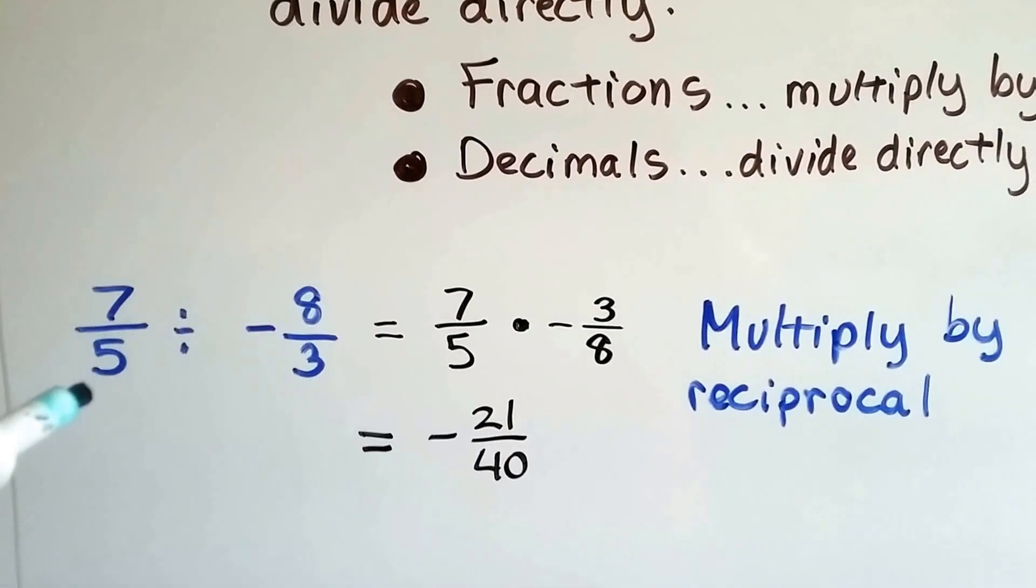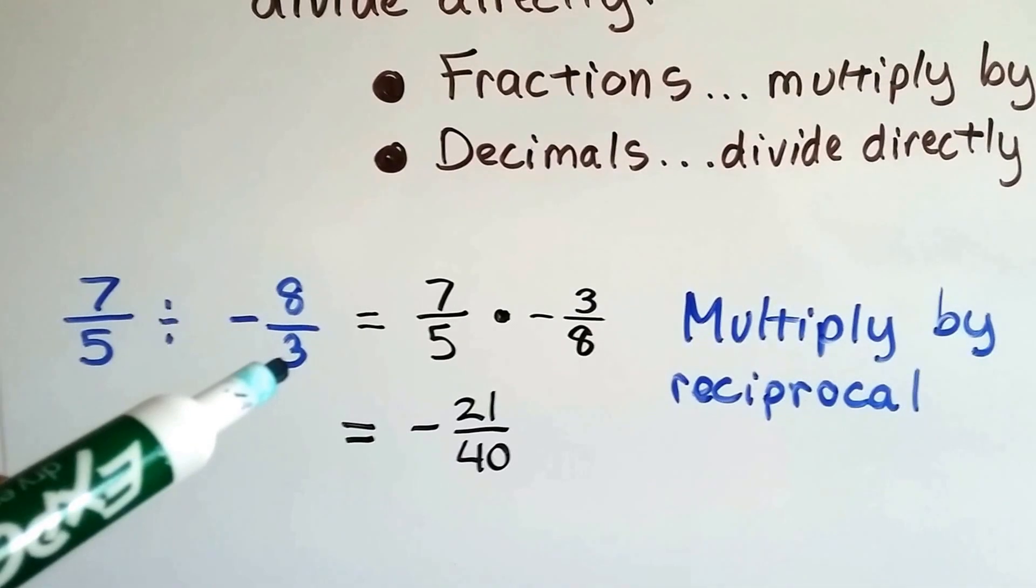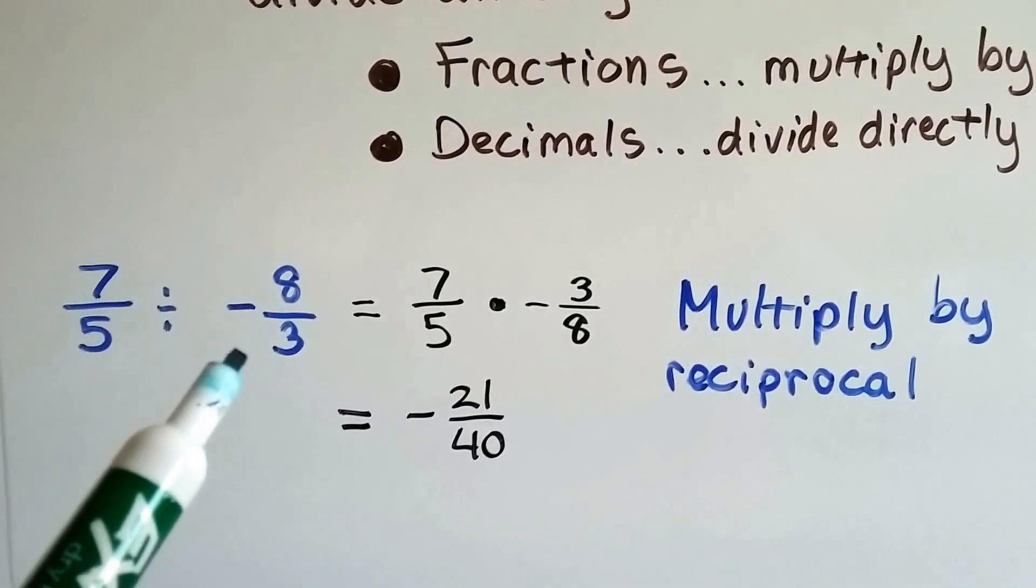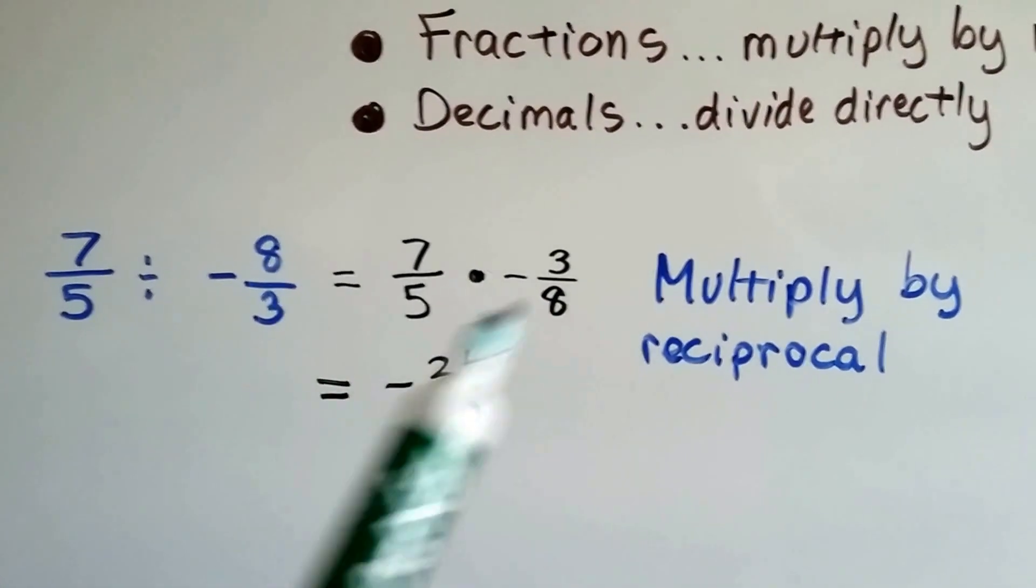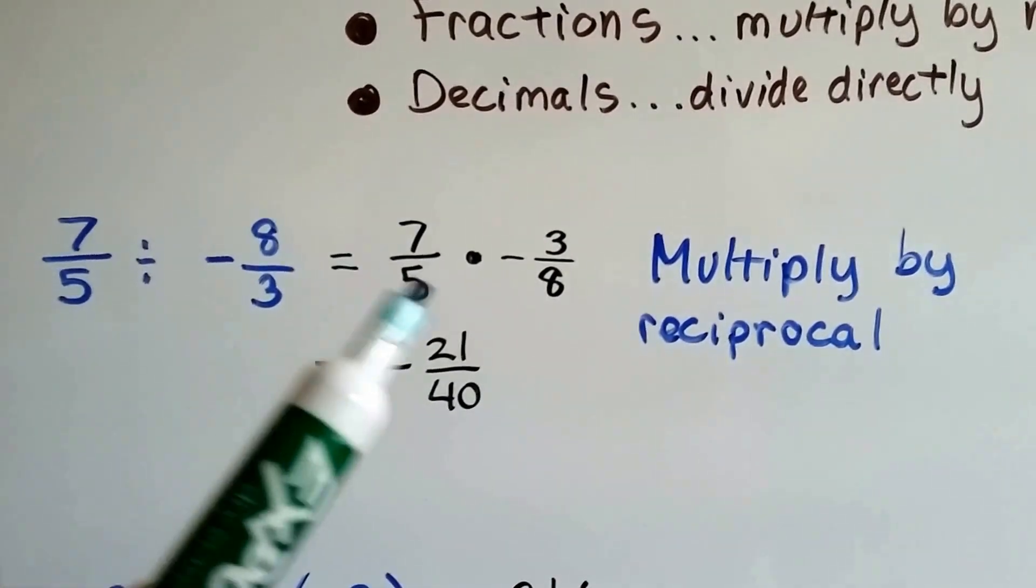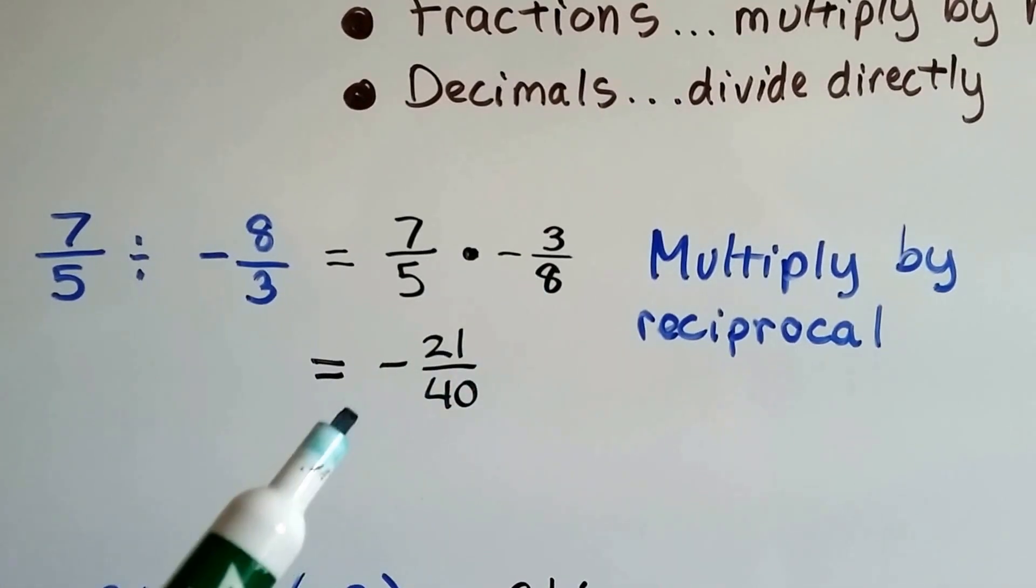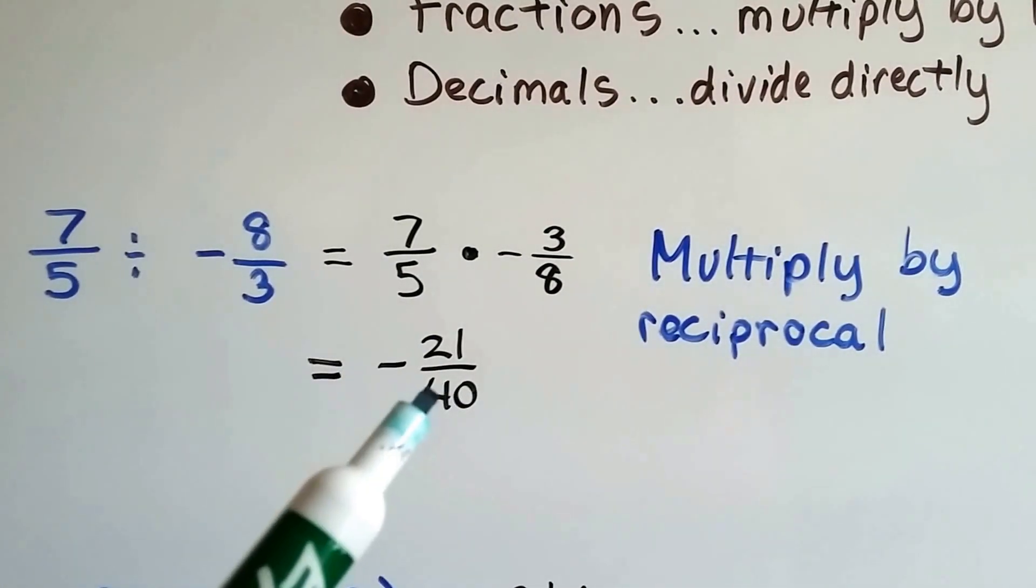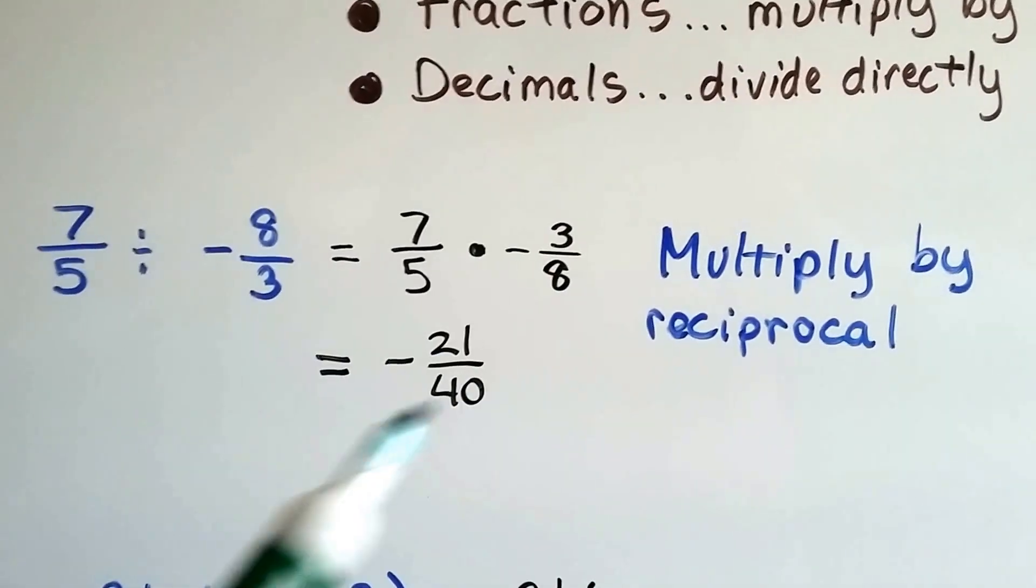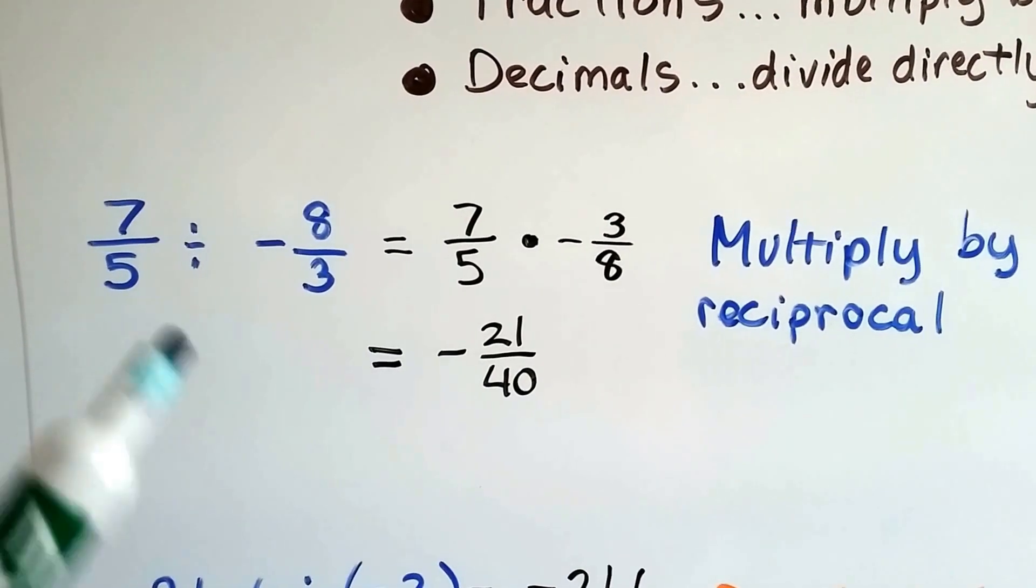So if we've got 7 fifths divided by negative 8 thirds, all we have to do is flip this around so it's negative 3 eighths and now we can just multiply straight across. And we get 7 times negative 3 is negative 21. And 5 times 8 is 40. So we've got negative 21 fortieths. By multiplying by the reciprocal, it was a lot easier than dividing.